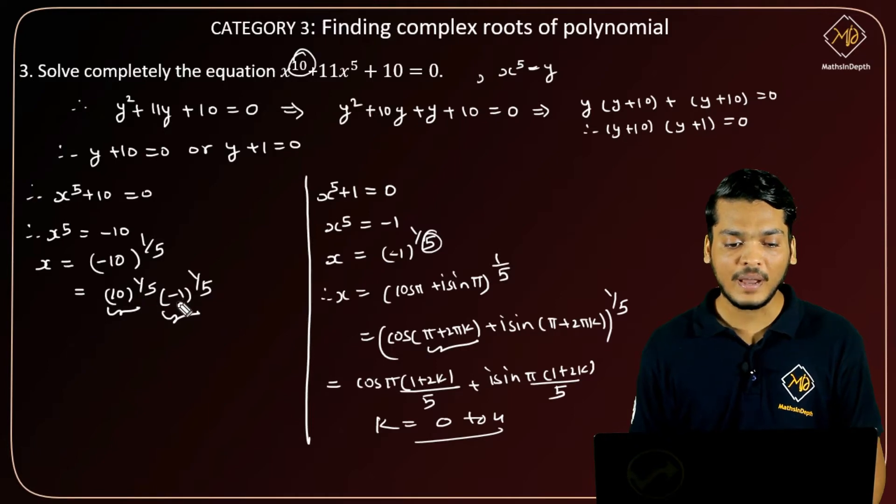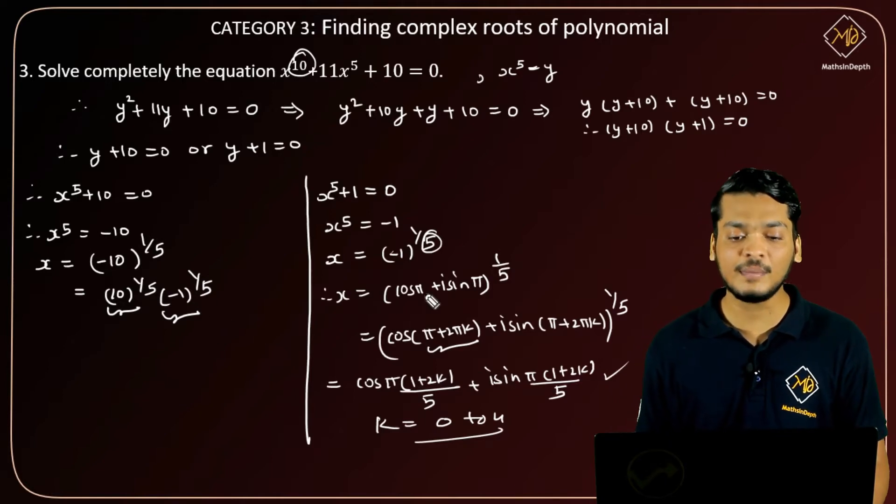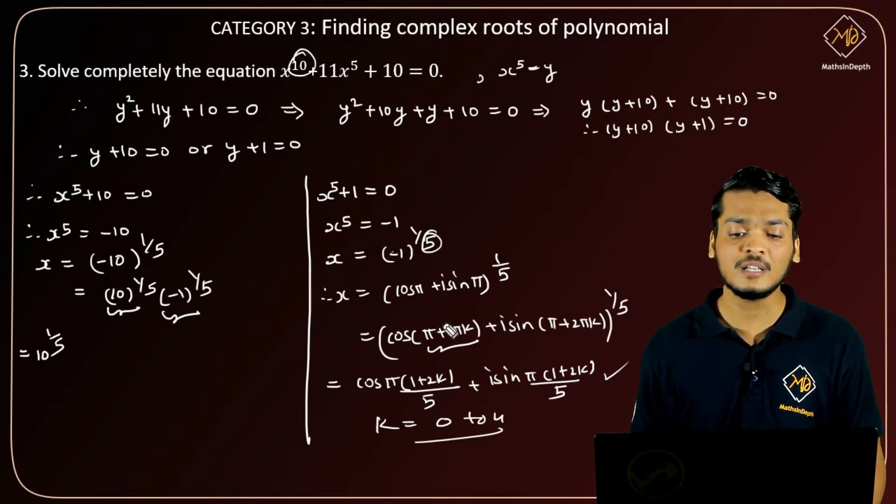So this constant times (-1)^(1/5), what is this? This is (-1)^(1/5) that we already calculated. So here I am going to use this. I will do it later. In the exam, you will be able to use the result.